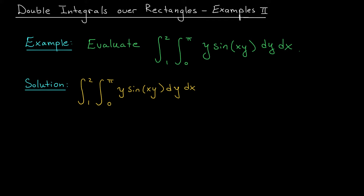Remember, integration by parts is sort of like the product rule for derivatives, but working in reverse. It says that if you're integrating a product of two functions, you can differentiate one and anti-differentiate the other and combine them to evaluate your integral. Formally, if you're integrating something of the form u dv, then this integral equals uv minus the integral of v du.